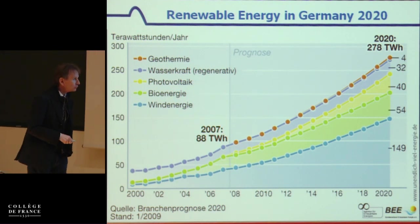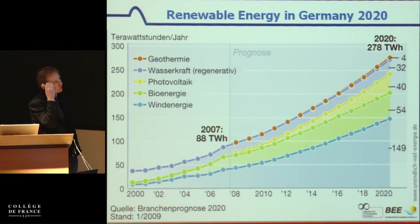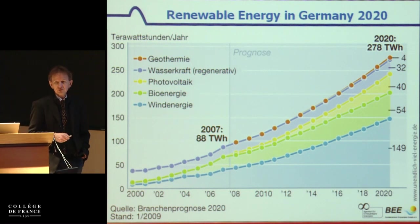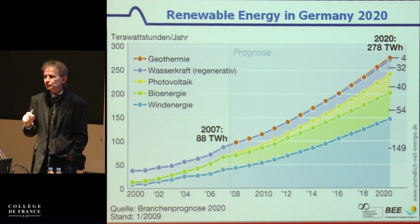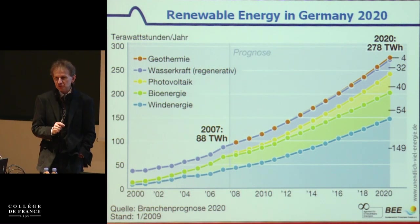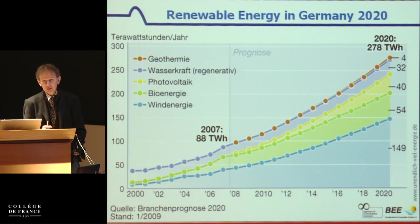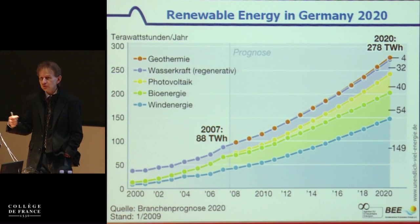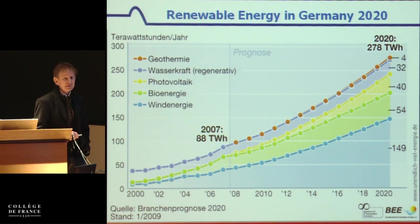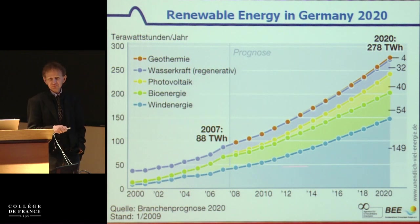This plan started in 2009 and was published then, but we are currently ahead of plan. After the Fukushima incident, it was decided to have by 2020 50% of electricity — not of overall energy, to be clear — as renewable electricity. And by 2050 it should be 100%. This is a very ambitious goal. The main source predicted as renewable energy in Germany will be wind — you can see here the increasing importance of wind.